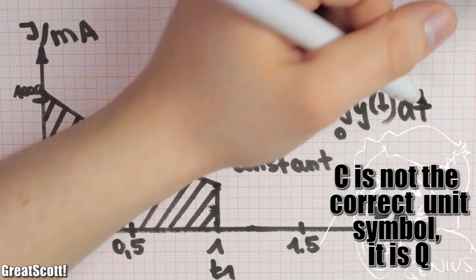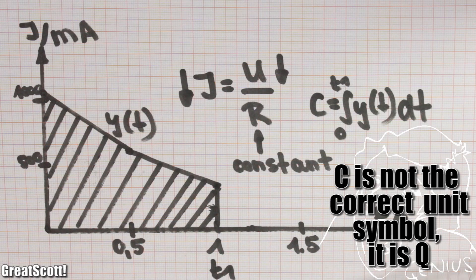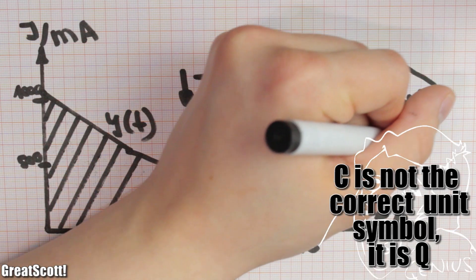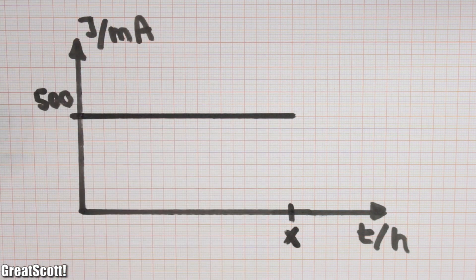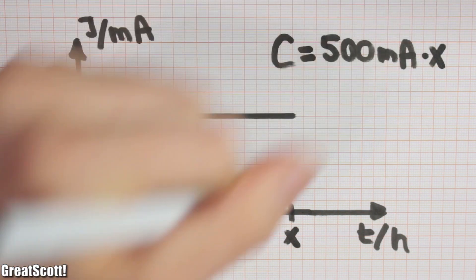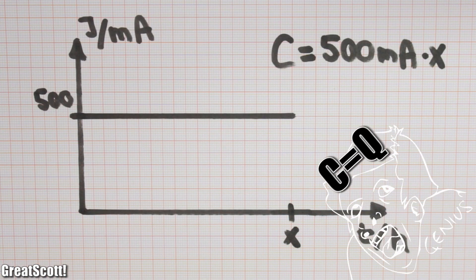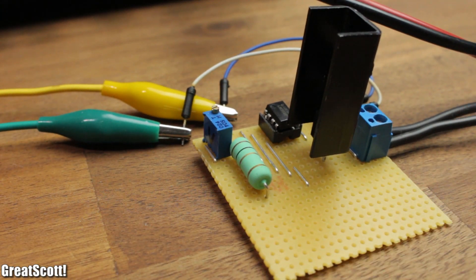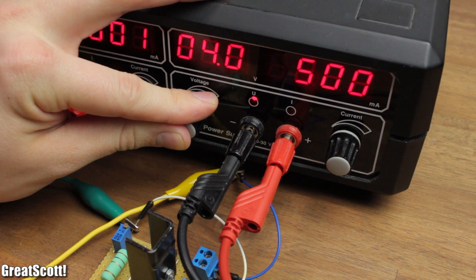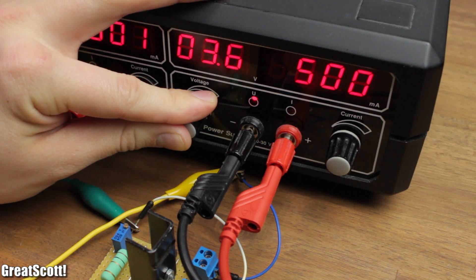Calculating the capacity from this function involves an integral and is quite inaccurate in this case. It would be way easier if our current supply stays the same no matter how the voltage changes. But wait, we can do this with a constant current load. This guy can easily draw 500 milliamps even when the voltage drops from 4.2 volts to 2.5 volts.